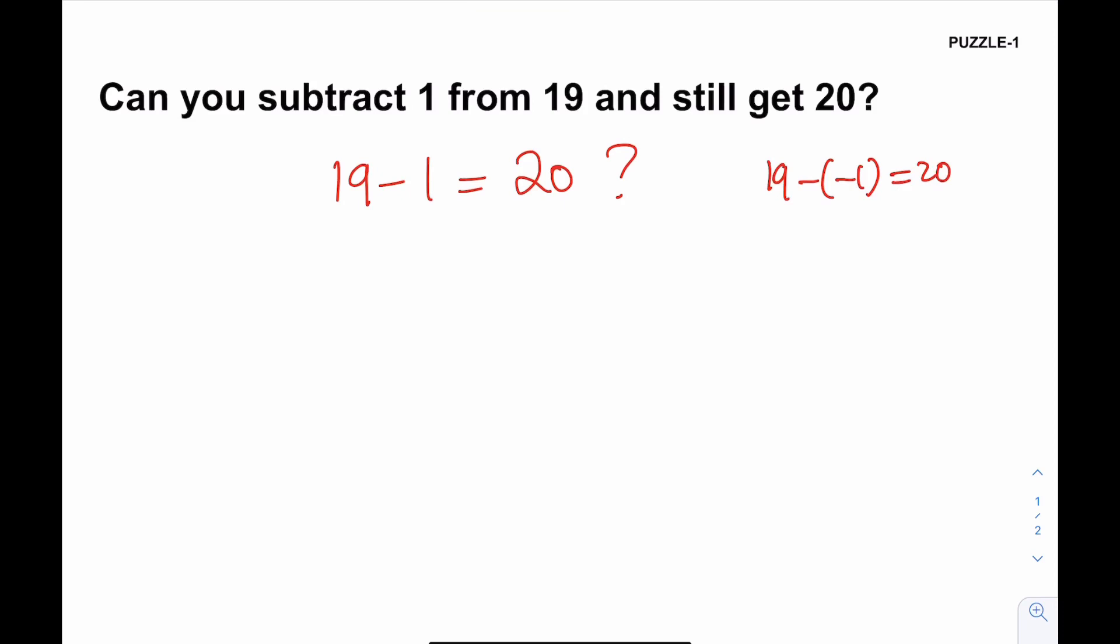What that means is that if you write 19 in Roman numerals, how do you write 19 in Roman numerals? Wait a minute. You have to write 10 first, right? X is 10. And how do you write 9? 9 is 1 less than 10, so you need to write like this. And when you put these together, this becomes what? 19, right?